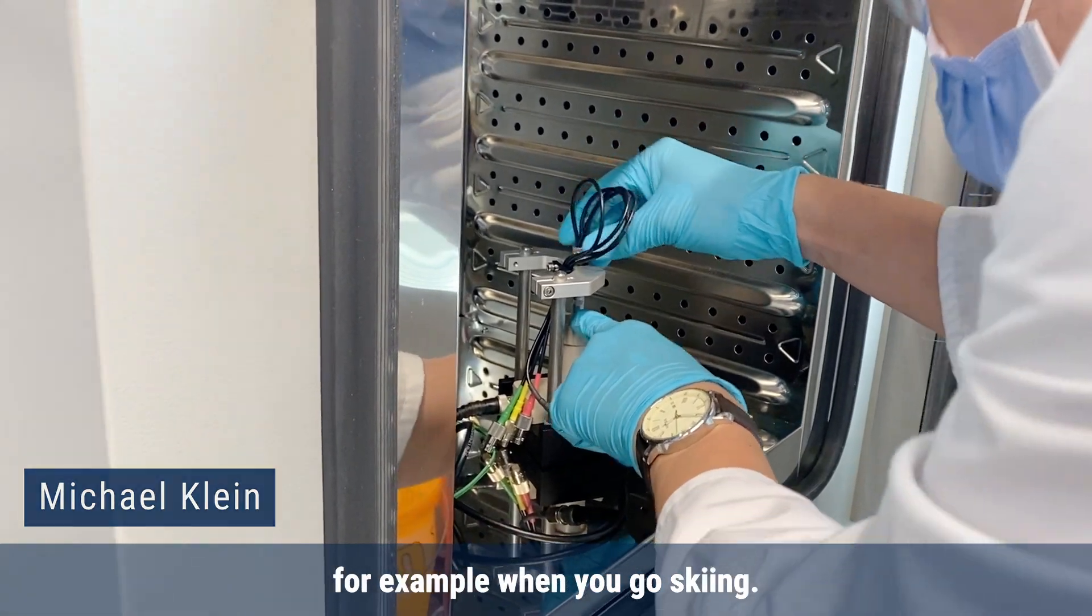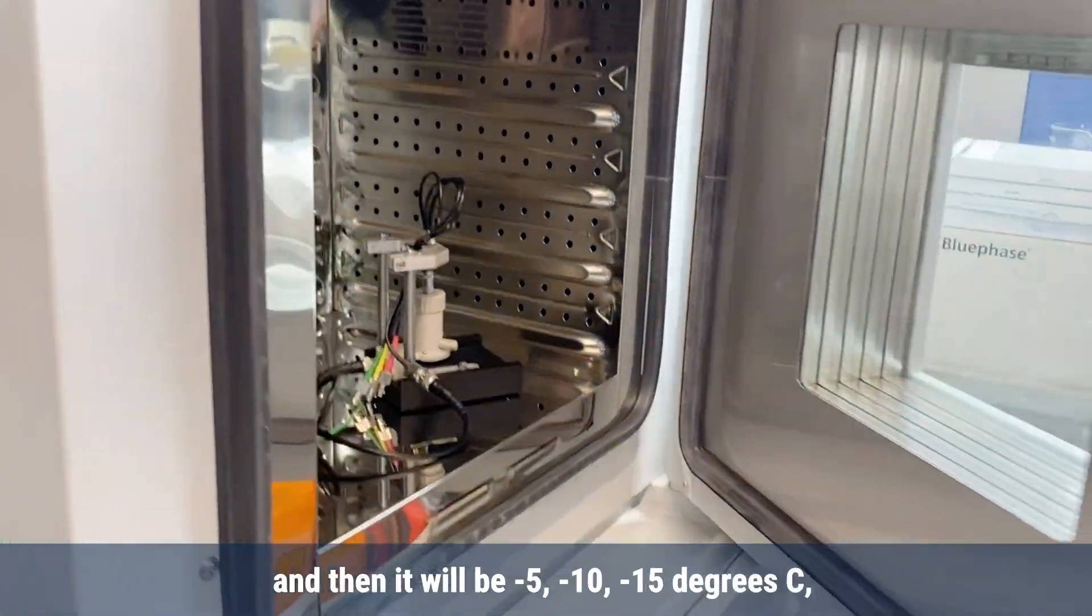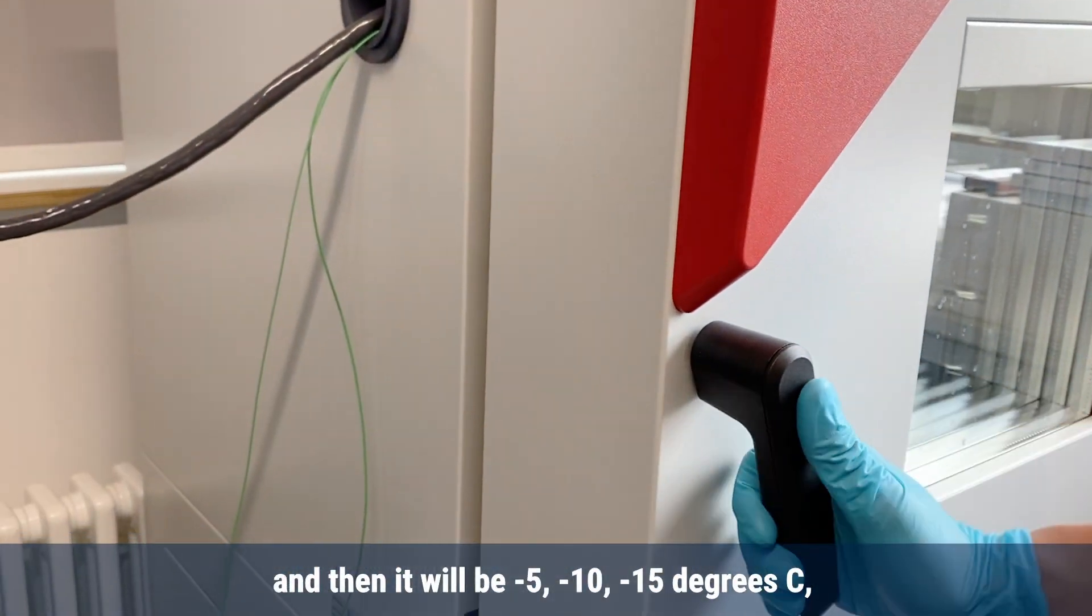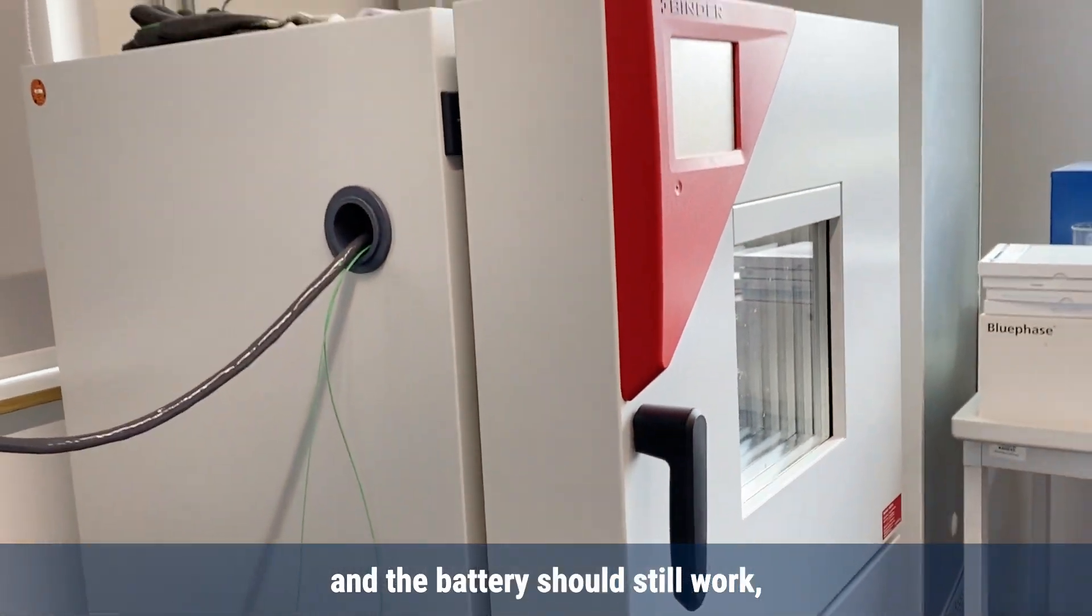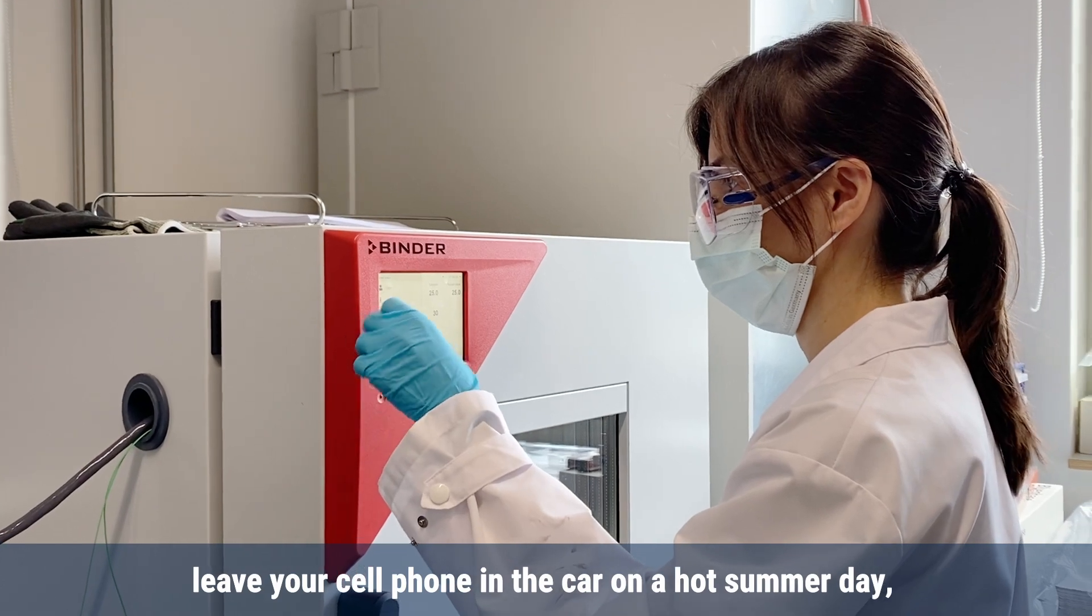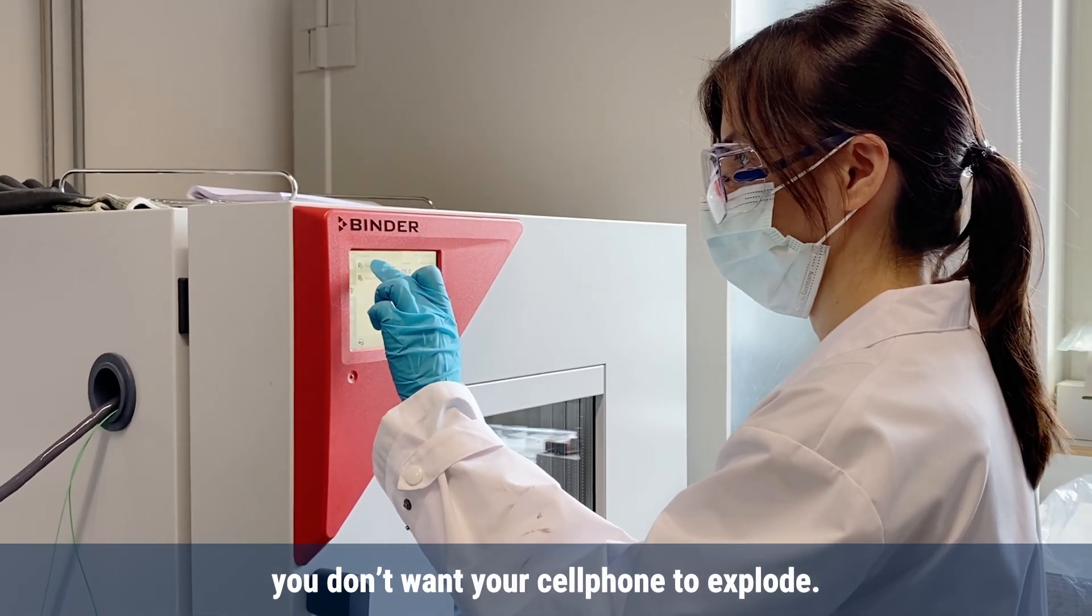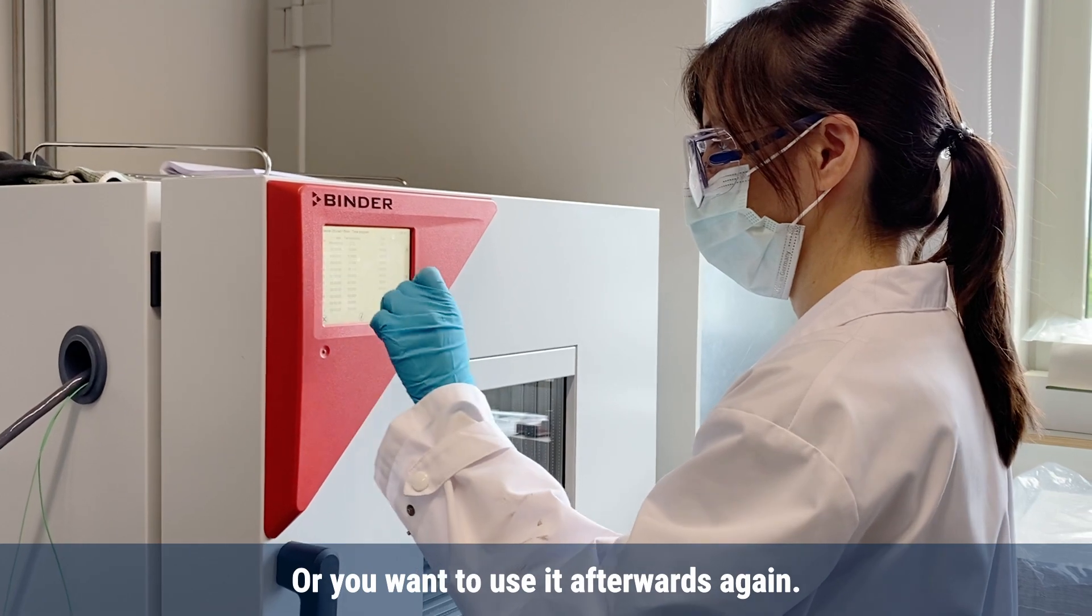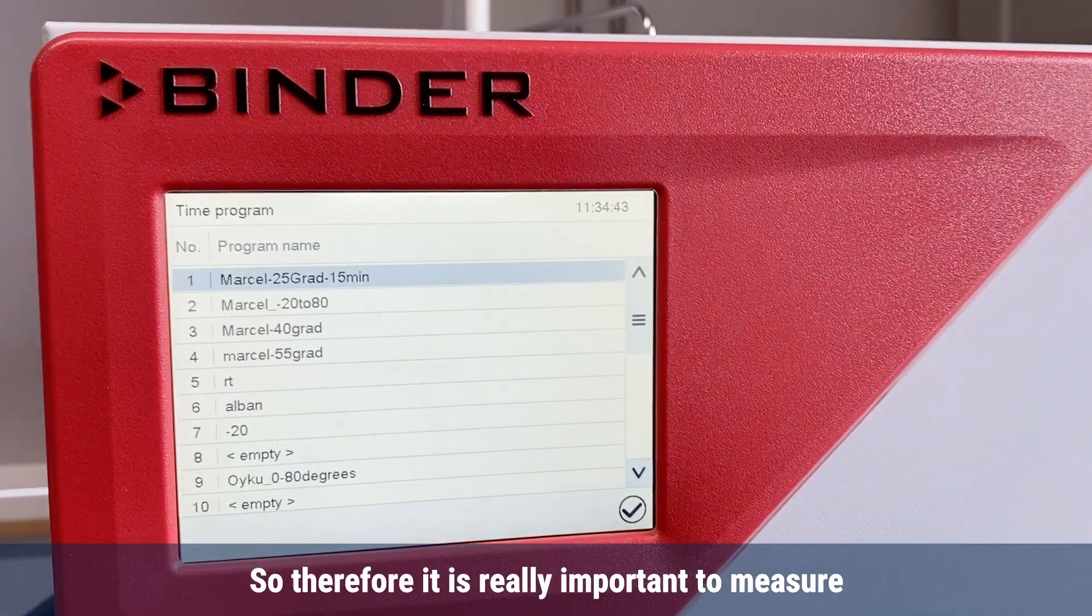You want to be able to use the battery when you go skiing. You want to have your cell phone, and it will be minus 5, minus 10, minus 15 degrees C, and the battery should still work. But also when you leave your cell phone in the car on a hot summer day, you don't want your cell phone to explode or you want to use it afterwards again. So it's really important to also measure these properties at different temperatures.